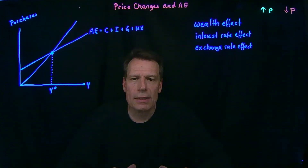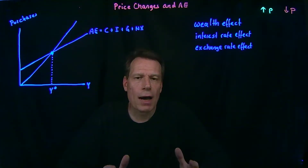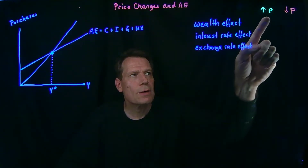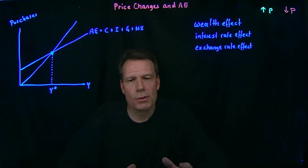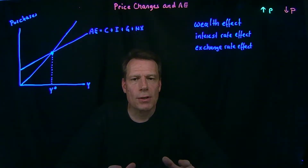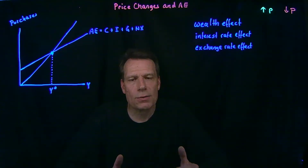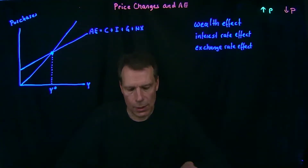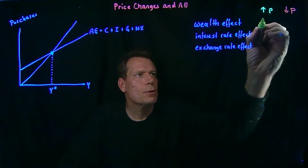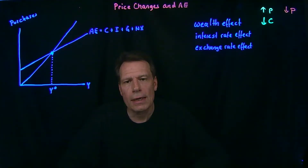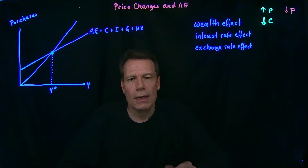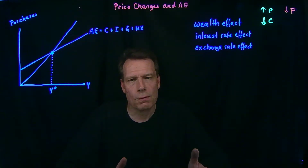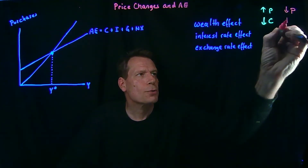The most straightforward of these effects is the wealth effect. If you have $100,000 in the bank and there's an increase in the general price level, that $100,000 isn't going to be able to purchase as much as it used to — in a real sense, you've become less wealthy. And when you're less wealthy, you buy fewer goods and services, so household consumption would fall. If there's a decrease in the general price level, then that $100,000 can now buy more than it used to, you've become wealthier, and we buy more goods and services, so there's an increase in household consumption.